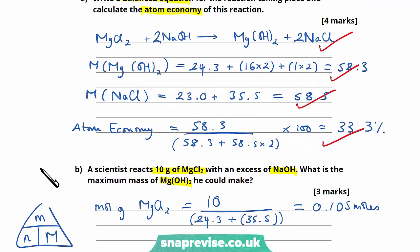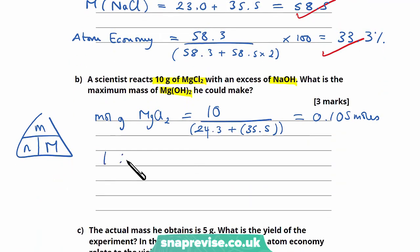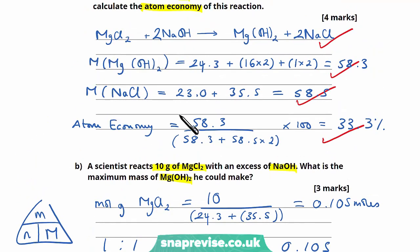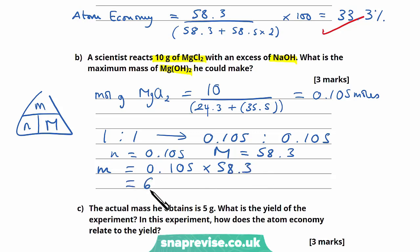Looking at the balanced equation, magnesium chloride and magnesium hydroxide have a one-to-one ratio, so 0.105 moles of magnesium chloride will form 0.105 moles of magnesium hydroxide. We know the molar mass of magnesium hydroxide is 58.3. Mass equals molar mass multiplied by moles: 0.105 times 58.3 gives us 6.1 grams.